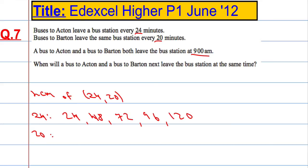Let's do the 20 times table: 20, 40, 60, 80, 100, 120. We can see that the lowest common multiple in both lists is 120 minutes.